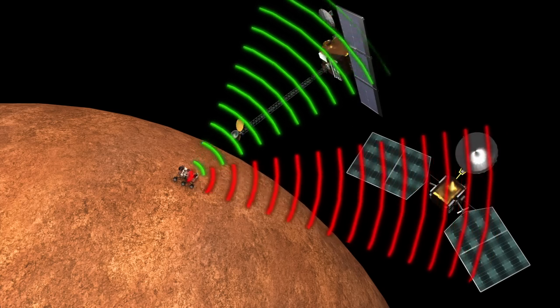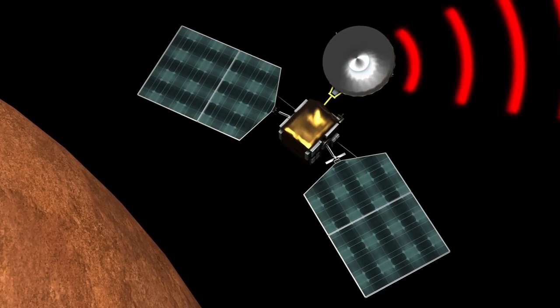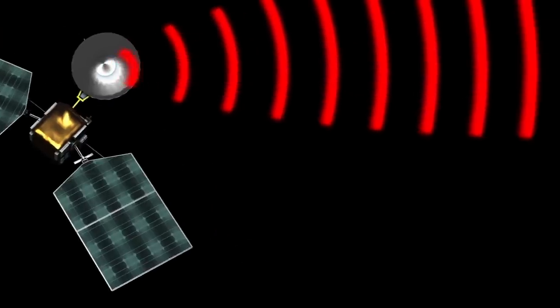There, they receive signals from Curiosity and retransmit them back to Earth. MRO transmits data at 6 megabits per second, about the same speed as a fast internet connection.